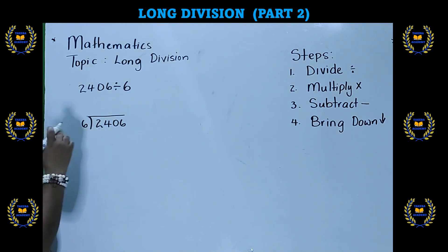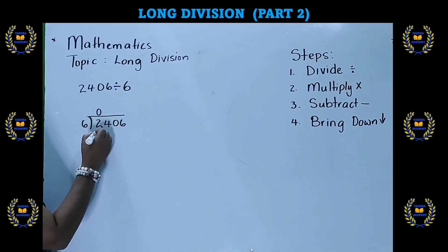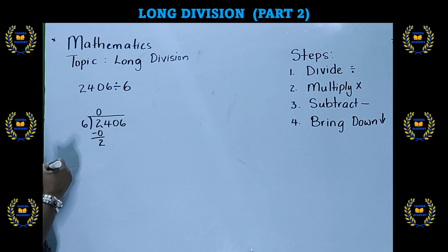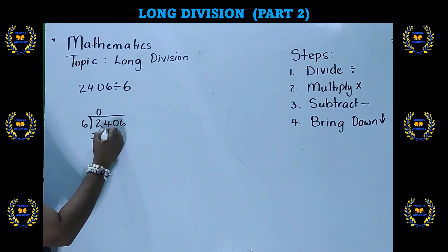So let's start. 2 divided by 6. How many groups of 6 can we get out of 2? The answer is 0. Then 6 times 0, which is our second step. The answer is 0. Then we subtract, which is the third step. We are left with 2. And then we bring down. So now we have 24.